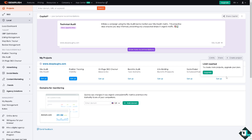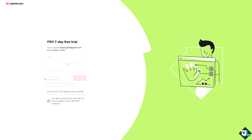If you click that button you'll be forwarded to the upgrade interface, which shows two options for upgrading to SEMrush. They offer a seven-day free trial for the Pro plan, with the first charge being $139.